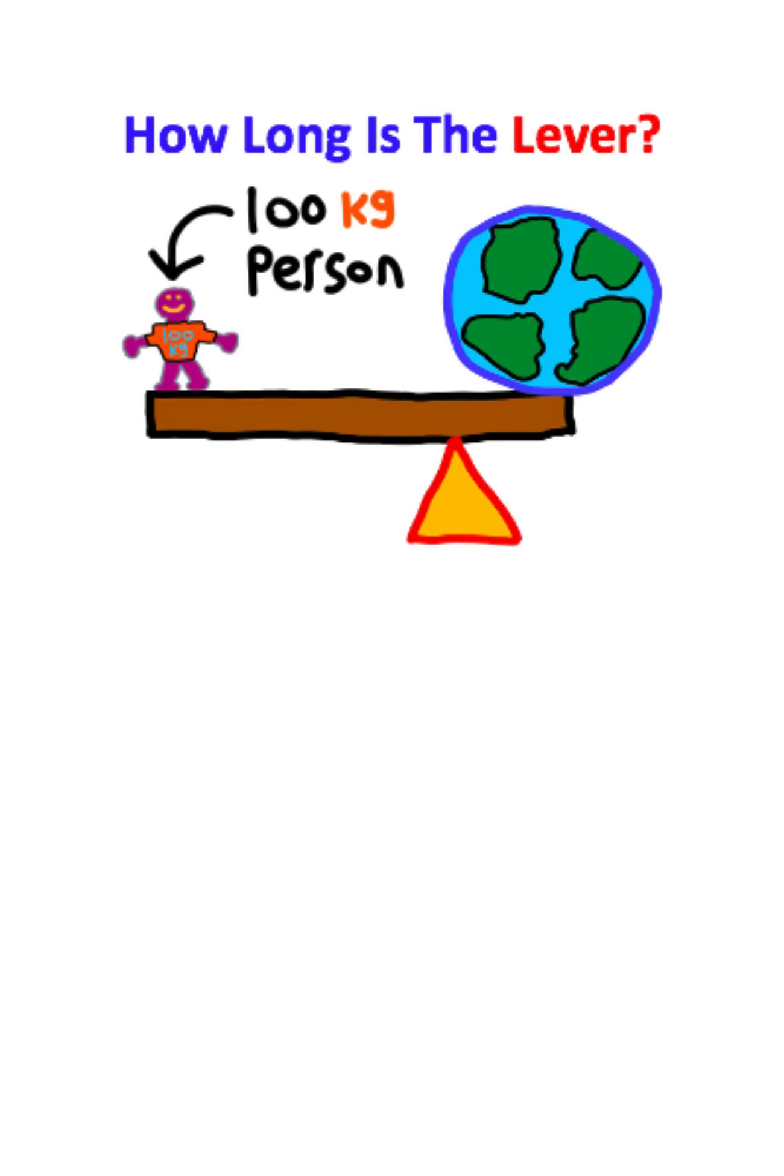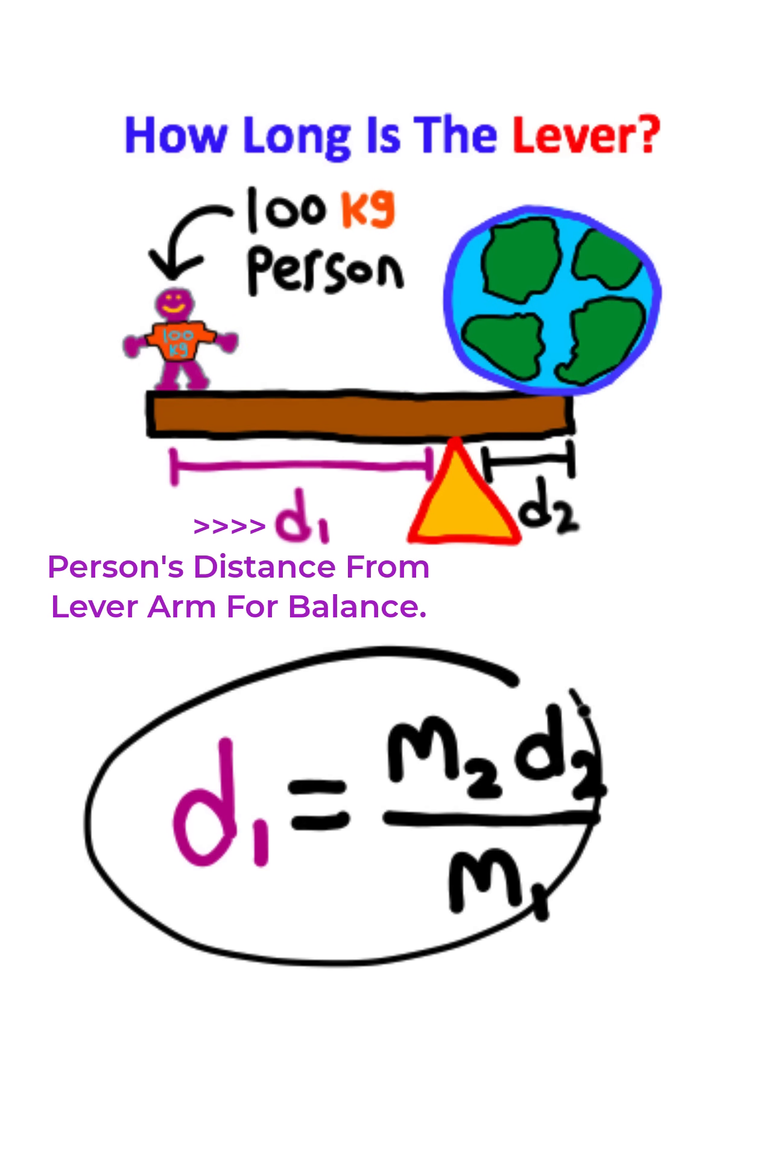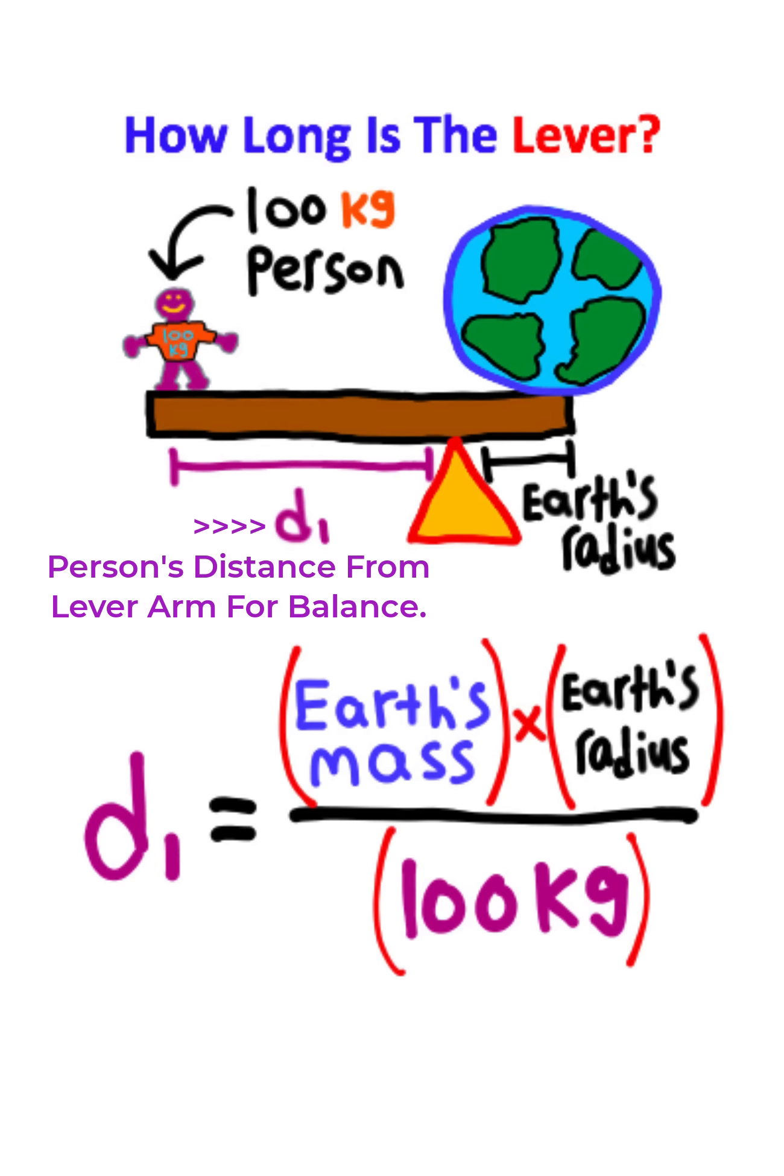What I'm first going to do is use a mechanics balancing equation. I can use this formula by taking the mass of the Earth and multiplying it by the radius of Earth, assuming that is Earth's distance to the fulcrum point, and then dividing that result by the mass of the 100 kilogram person.